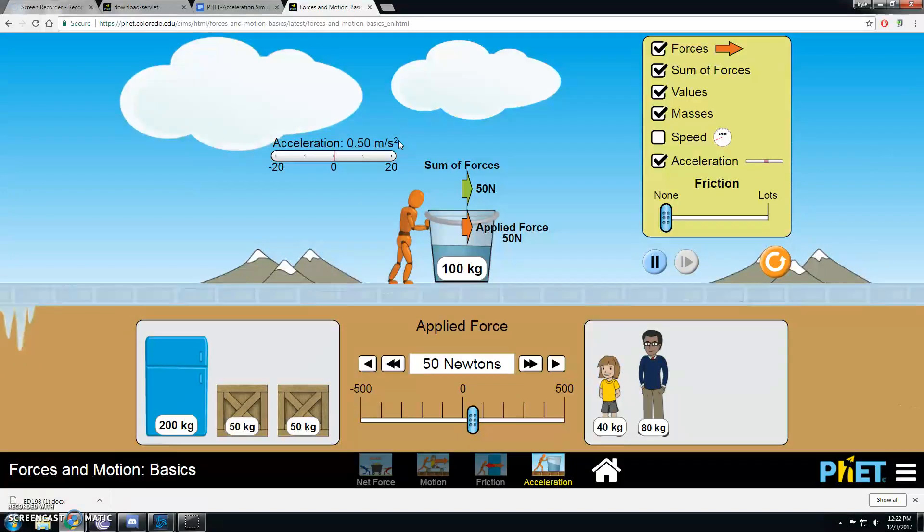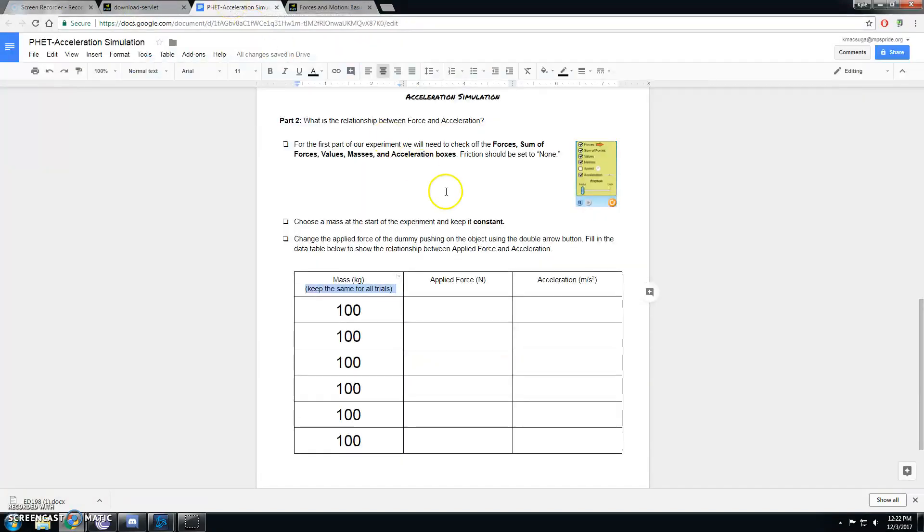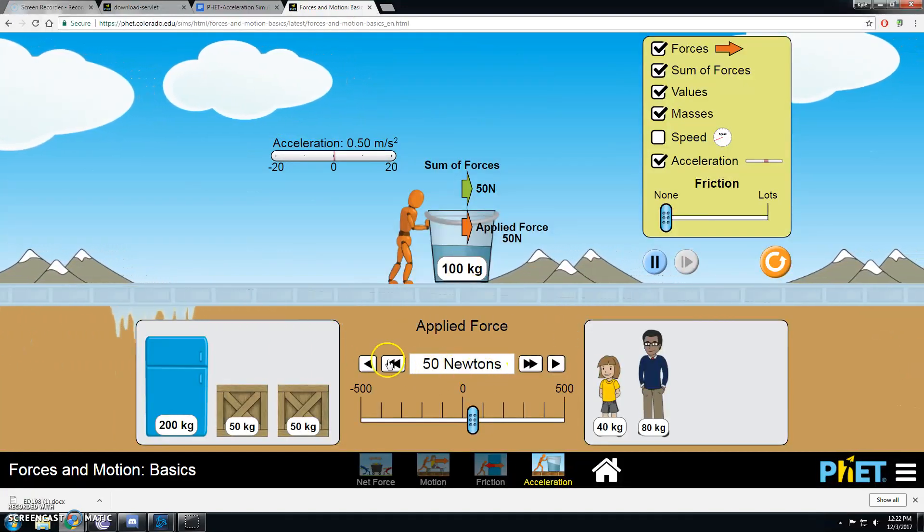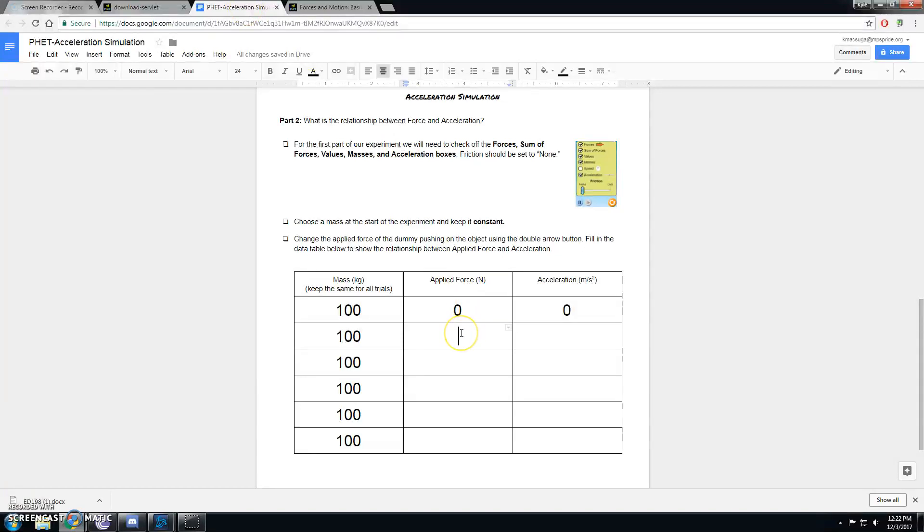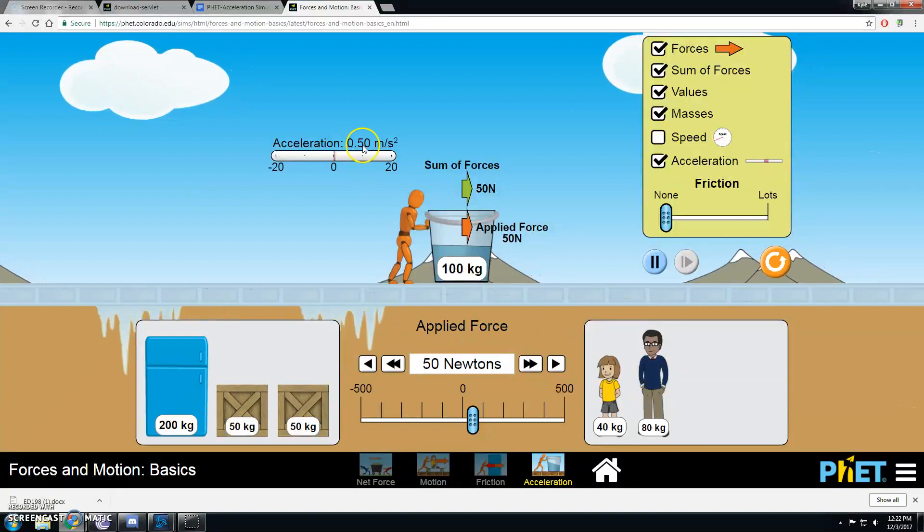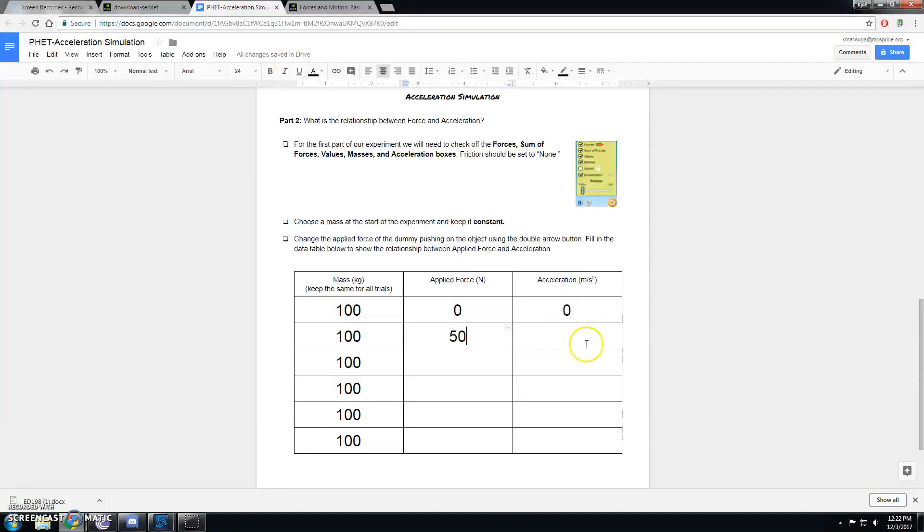So that means on our worksheet, well, we're actually going to start down here. If we apply 0 force, there's going to be 0 acceleration. Now if we go, sorry, just bear with me one second. Now if we go back to here, we see that we're applying 50 newtons of force. So we're going to put 50 right here, and our acceleration is 0.5 meters per second squared. So we're going to put 0.5.